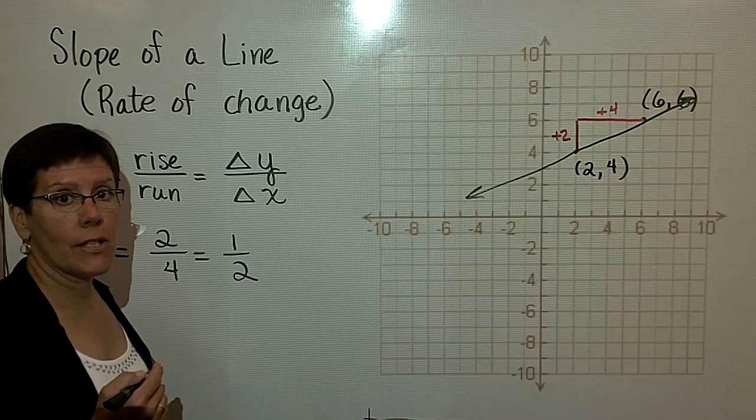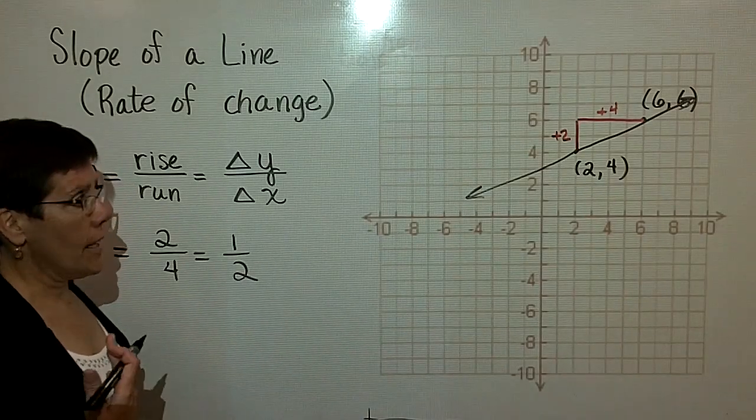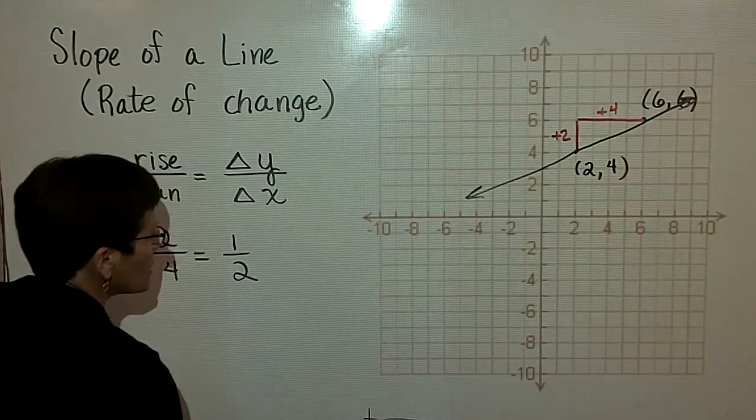So one of the ways that I can find the slope of the line is to graph the ordered pairs and then look at the change in Y over the change in X.